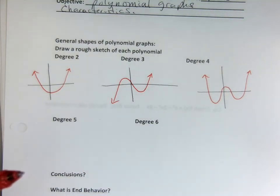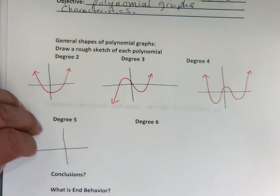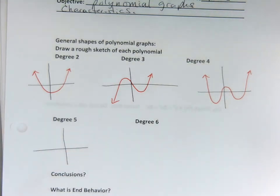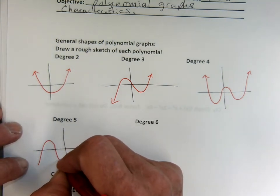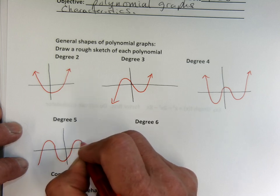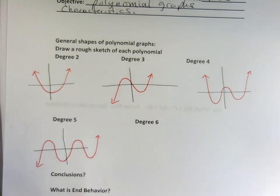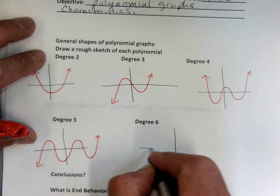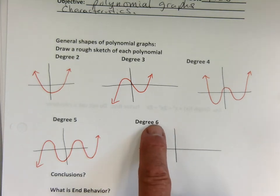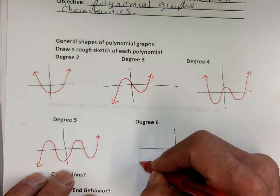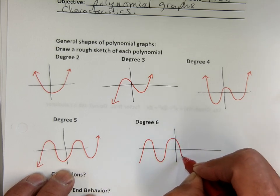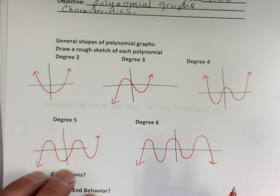So Lauren said degree five is going to have four bumps. Degree six should have five bumps. This one's got one, two, three, four bumps. This one could be degree six — could have five bumps. Thank you, Lauren.